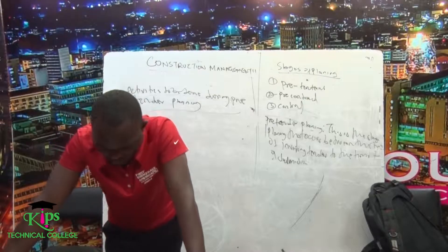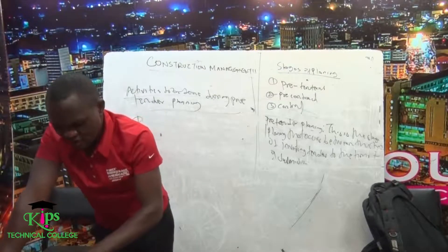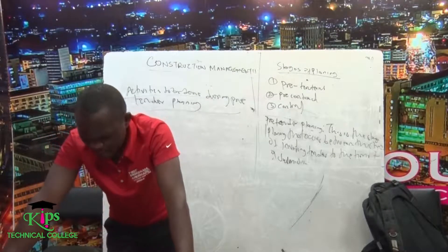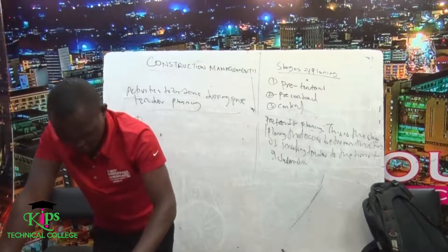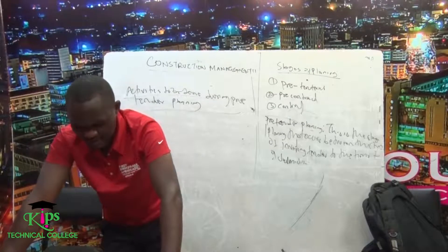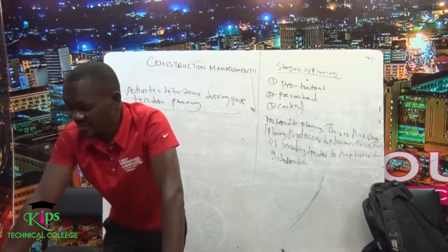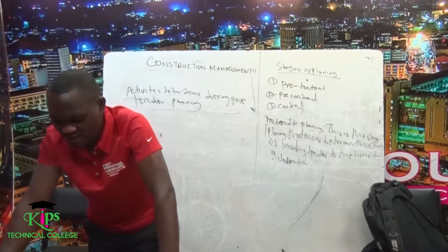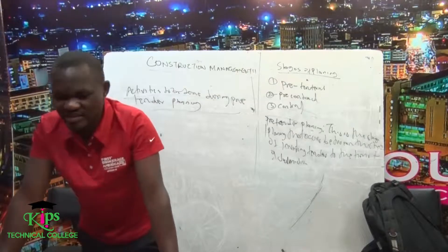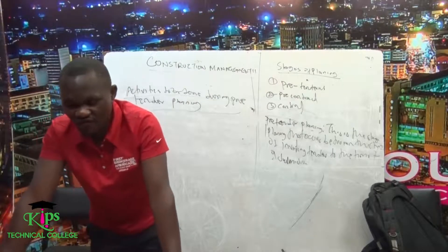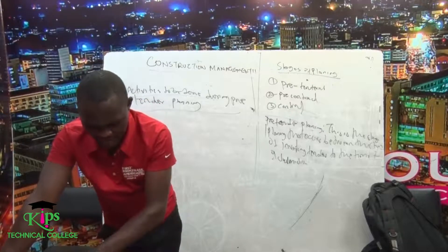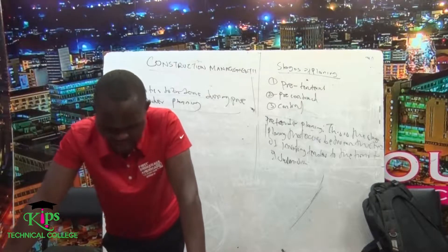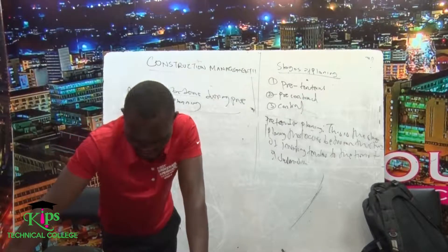When we talk about pre-contract planning, we can have the pre-contract meeting. This is a meeting between the clients and the potential contractor, where they present a good plan for the site. Then again, you can have the site layout planning, the master program, and any other comments.